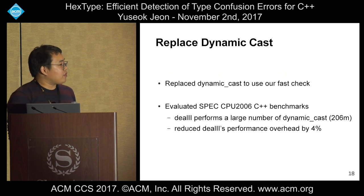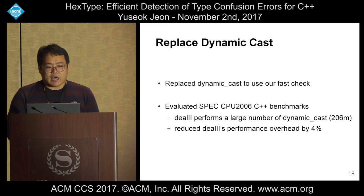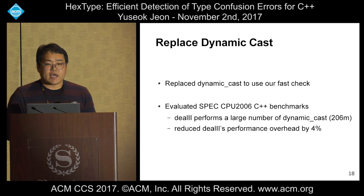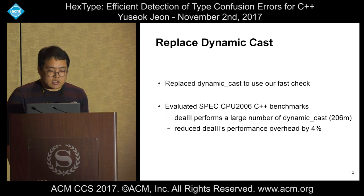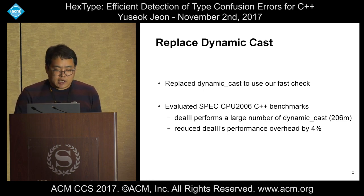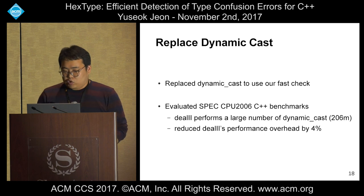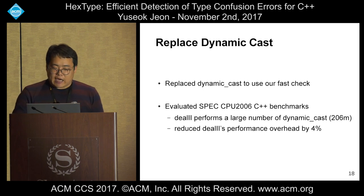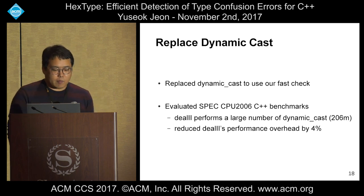Our third optimization: since dynamic cast is very expensive, we replace dynamic casts with our fast check. We evaluate this using the SPEC benchmark. For example, the 'deal' benchmark has over 200 million dynamic casts, and after replacing them with our fast check, we can reduce overhead by 4%.